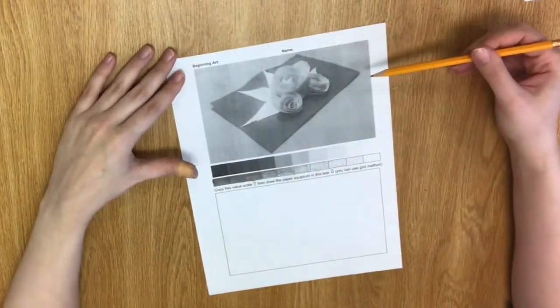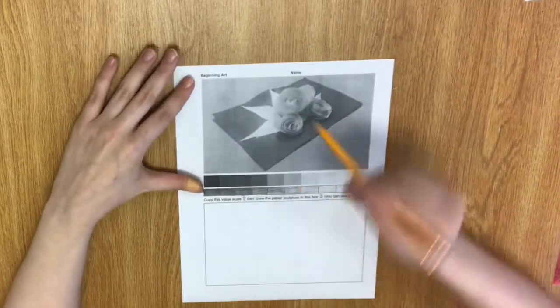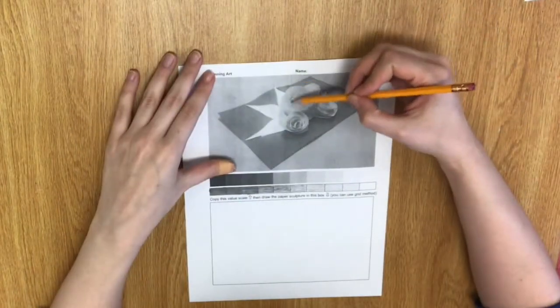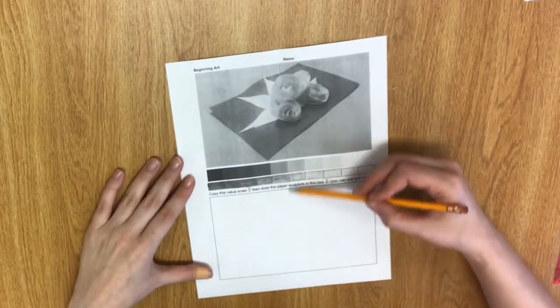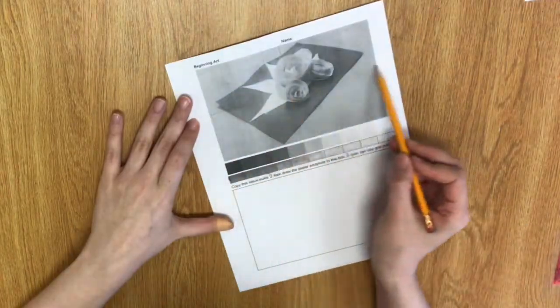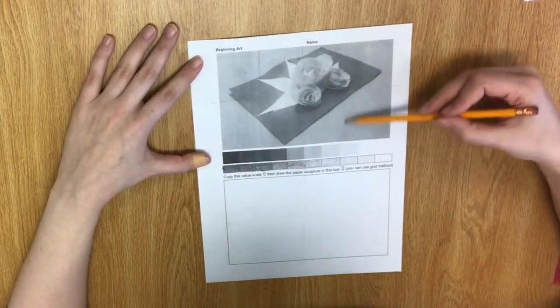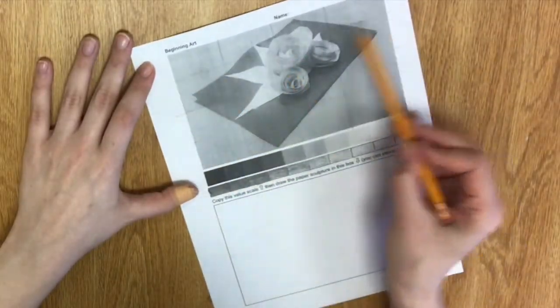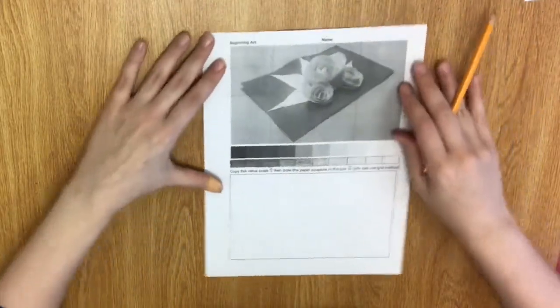You could either measure a precise grid using a ruler, or you could kind of ballpark it by doing halves. So, if the half of this is right there, draw a line, draw a line. And then half of this. Now go a little bit further. Half of this. Half of this.